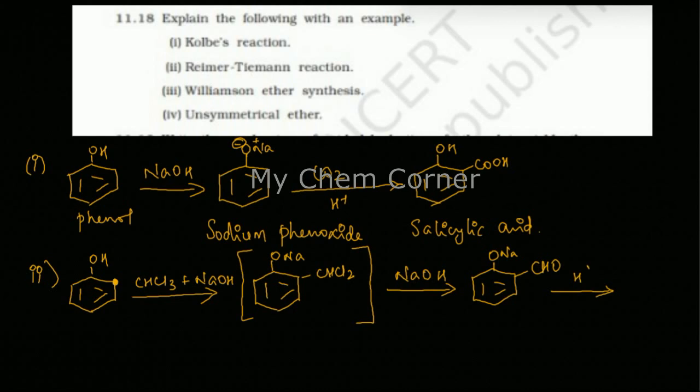So here you will form O-Na and an aldehydic group. Now the last one, the O-Na needs to change, so that will react with more acid and you will form OH and CHO. In the ortho position, when compared to the previous one you had a carboxylic group, in this you have an aldehydic group, so this is called as salicylaldehyde.